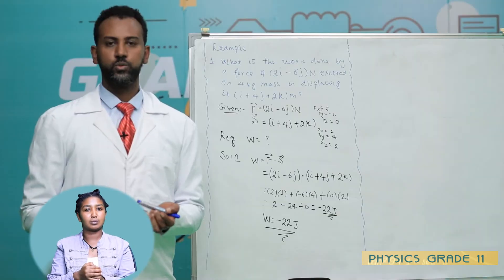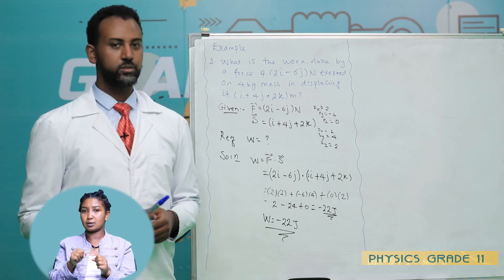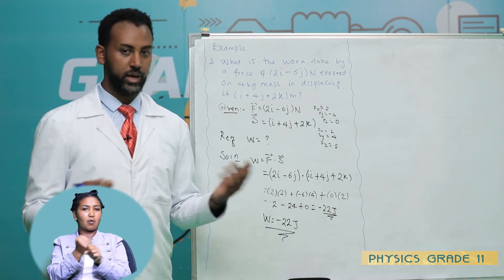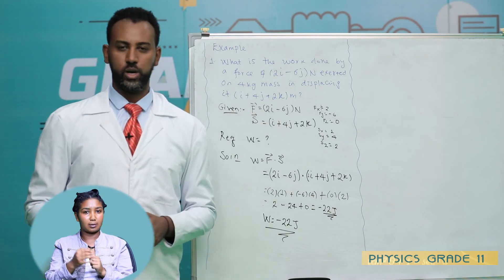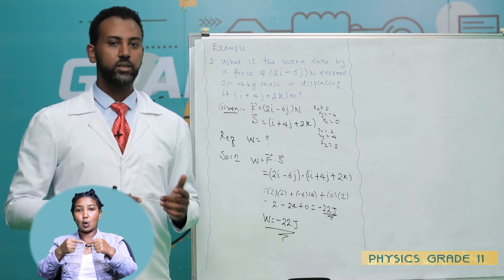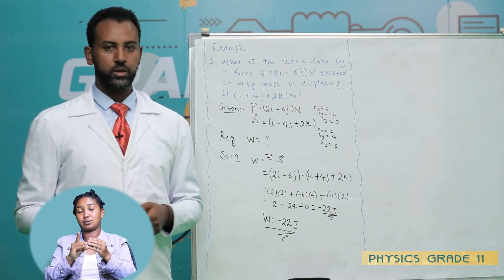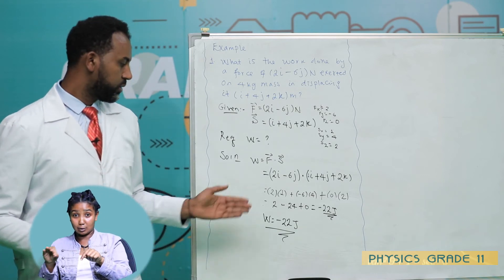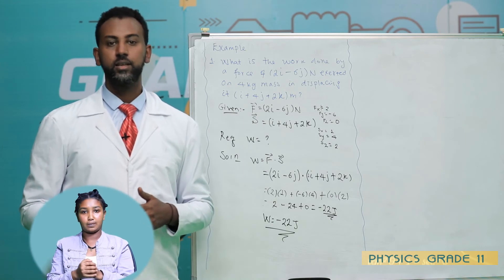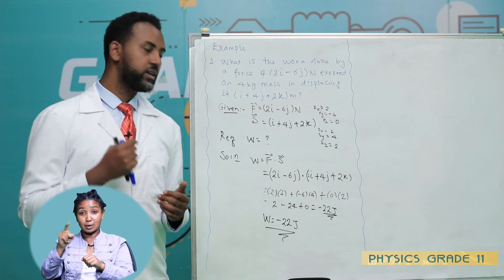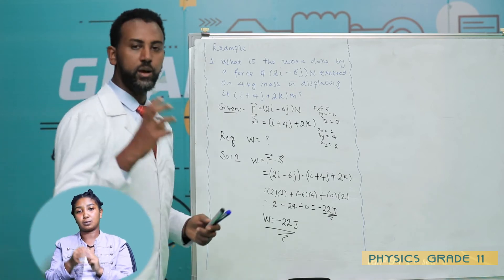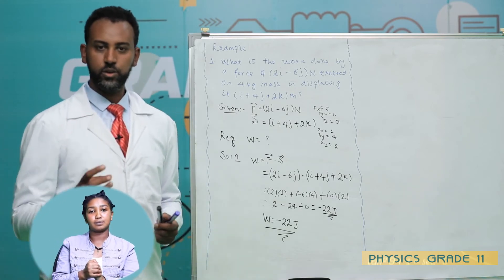Students, do you think that work can be negative? Yes, work can be negative, zero, or positive. When work is negative, it means the force and displacement are in opposite directions — parallel but opposite. When force and displacement are perpendicular, work is zero. When force and displacement are parallel in the same direction, work is positive.